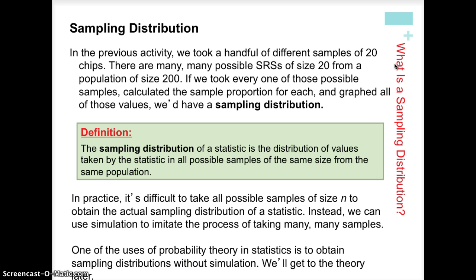In practice, it's very difficult to take all combinations unless we have a very small sample size. So instead, we usually just take many samples — a large enough number that it is practical and affordable — and we'll use simulation sometimes. That gives us an approximation of the sampling distribution.